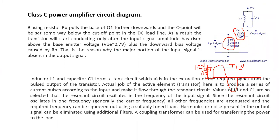Inductor L1 and capacitor C1 form a tank circuit which aids the extraction of the required signal from the pulsed output of the transistor. The actual job of the active element here is to produce a series of current pulses according to the input and make it flow through the resonant circuit. Values of L1 and C1 are selected so that the resonant circuit oscillates at the frequency of the input signal. All other frequencies are attenuated and the required frequency can be extracted to the load. Harmonics or noise present in the output signal can be eliminated using additional filters. A coupling transformer can be used for transferring power to the load. This is the working of Class C power amplifier.